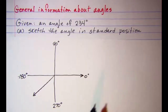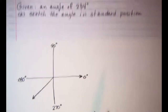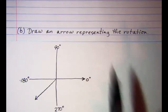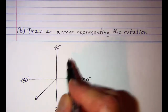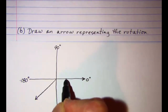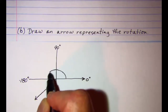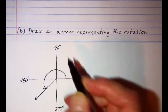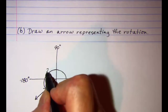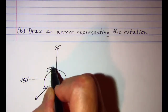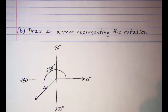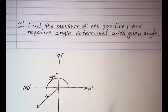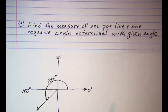The next thing we're asked to do is draw an arrow representing the rotation. This arrow represents the initial side, going around to the terminal side, and the angle measure of 234 degrees is indicated here.